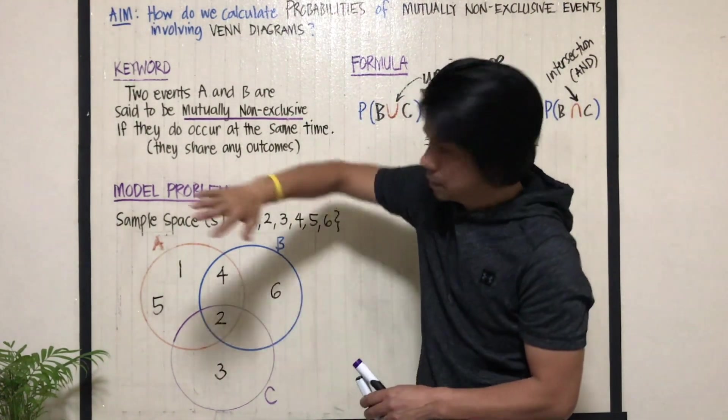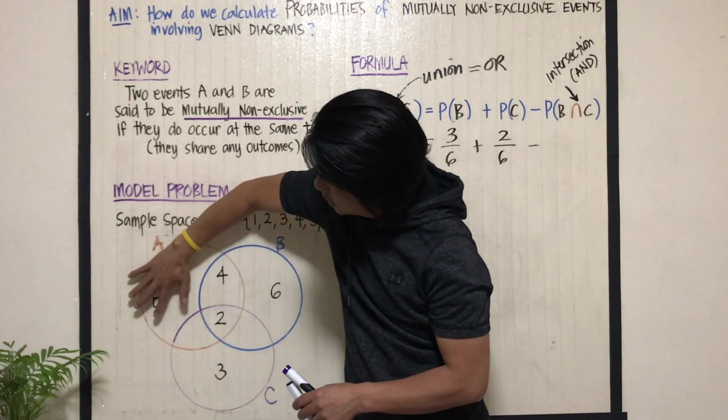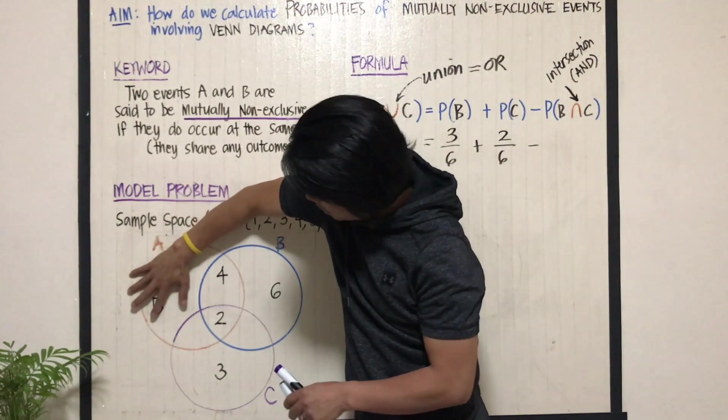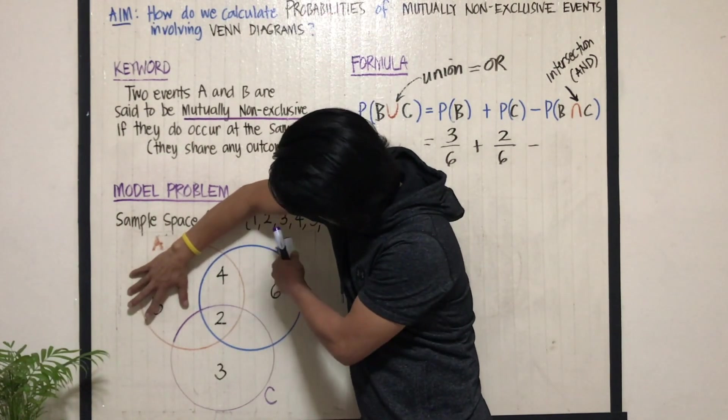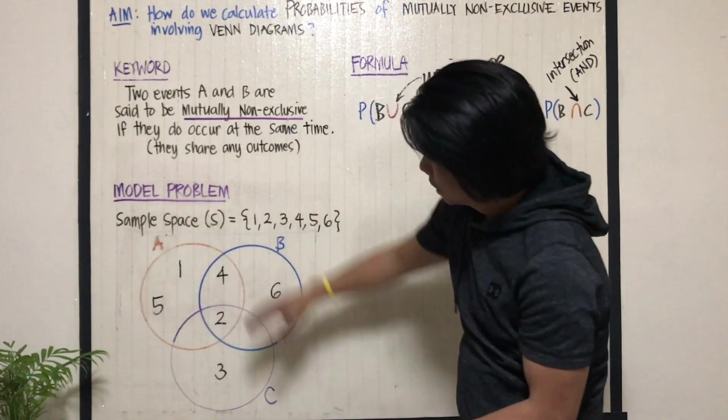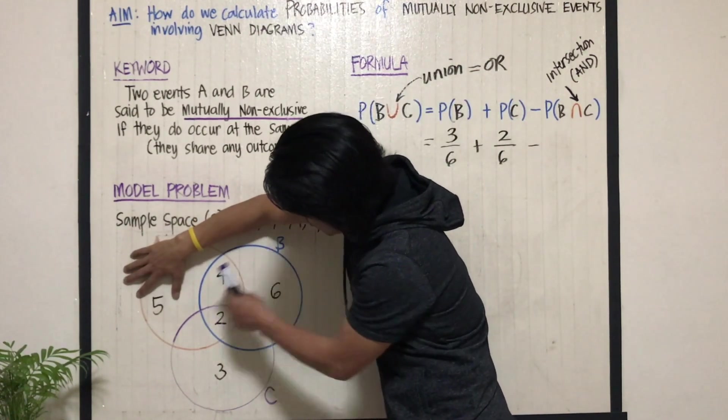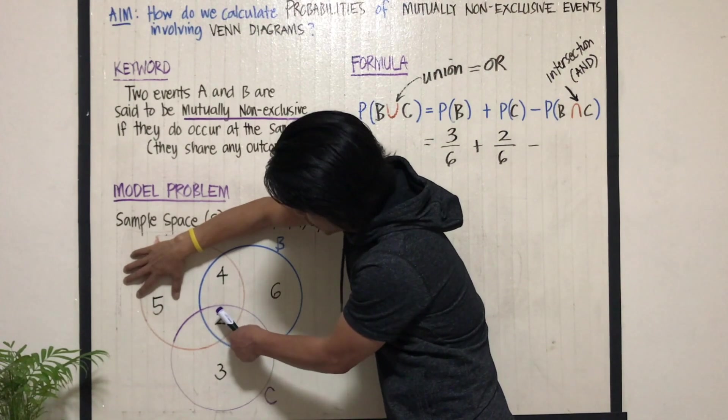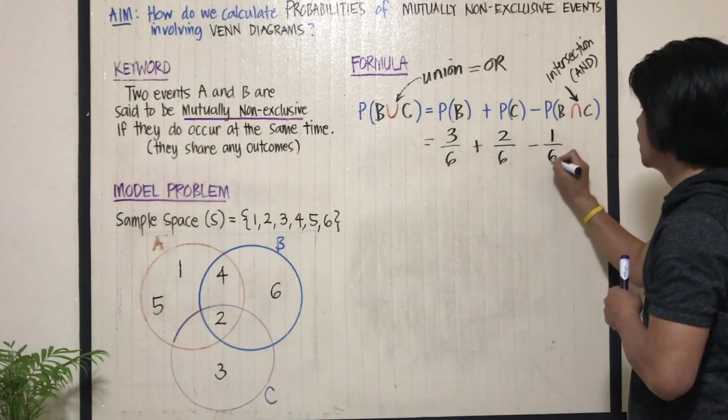Now, you need to ignore the other circle, circle A, so that you will be able to find the probability between events B and C. So what is the intersection between circle B and circle C? It's two. So therefore, there's only one number out of six.